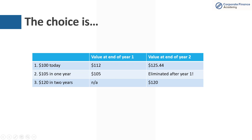So your choice: option one, $100 today, is worth $112 at the end of year one. $105 in one year is just $105. So you'd choose $112. And $120 two years from today — at the end of year two your $100 is worth $125.44, and you've already eliminated the $105 option. Your other option of $120 is lower than $125.44, so you would select $125.44. The best option in this scenario is to take the $100 today. Now, this assumes a risk-free rate of 12%, which is very difficult to find, but in this scenario you would choose $100 today.